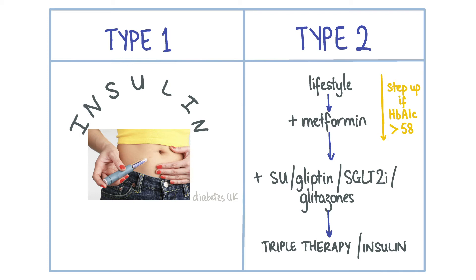SGLT2 inhibitors like dapagliflozin increase the excretion of glucose in the urine and are therefore associated with recurrent UTIs. GLP-1 mimetics like exenatide can be given to patients who have a BMI of 35 or above, as a common side effect is weight loss. They work by increasing insulin secretion and decreasing glucagon secretion. If dual drug therapy fails to lower HbA1c then triple therapy or insulin on its own can be trialled.